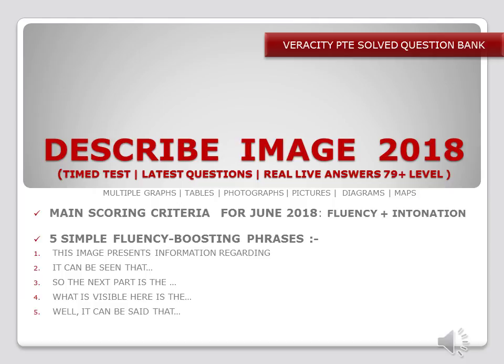The first line: 'This image presents information regarding' — and then as we form the other sentences, 'it can be seen that,' 'what is visible here is the,' and 'well it can be said that.' These basic phrases are to be kept in mind and I will illustrate just now how to use them.